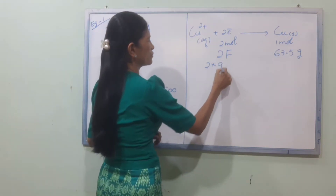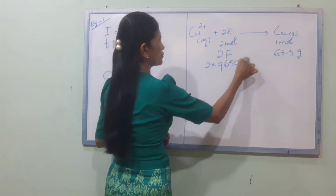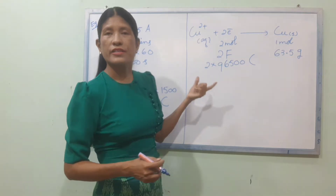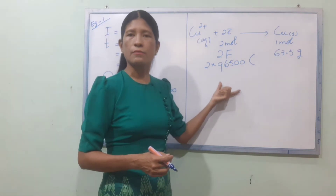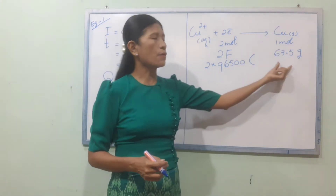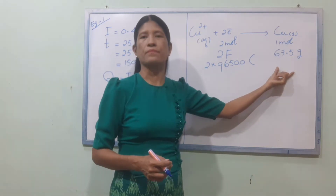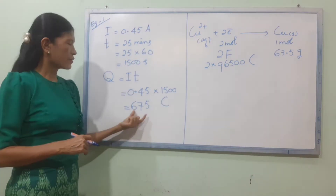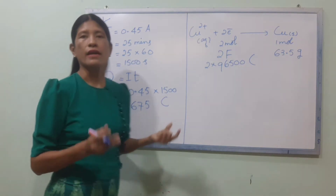The equation for Faraday's law: 2 times 96500 Coulombs deposits 63.5 grams of copper. The charge Q is 675 Coulombs.